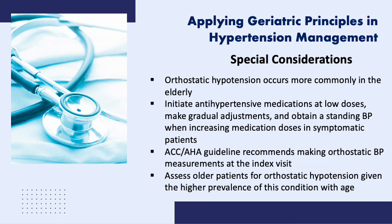Let's discuss some special considerations in the treatment of hypertension in the elderly. The treatment of elderly hypertensive patients is complicated by many factors. Orthostatic hypotension, defined as a supine-to-standing blood pressure difference of negative 20 over negative 10 mmHg, occurs more commonly in the elderly owing to a blunted baroreflex response that occurs with standing. Initiating antihypertensive medications at low doses and making gradual adjustments, and obtaining a standing blood pressure when increasing medication doses in symptomatic patients, are part of good practice. The American College of Cardiology/American Heart Association guidelines recommend making orthostatic blood pressure measurements at the index visit.